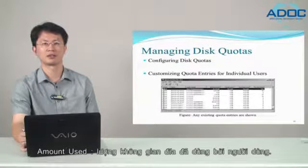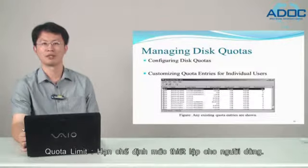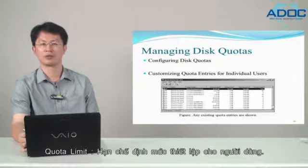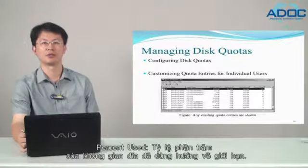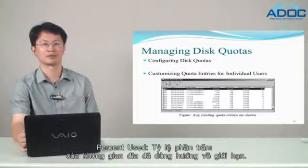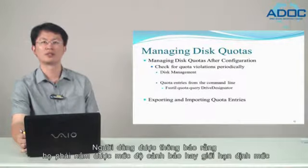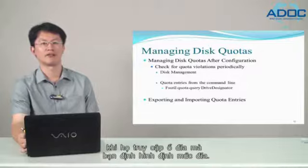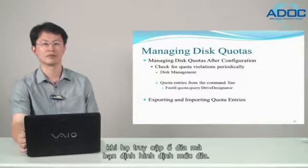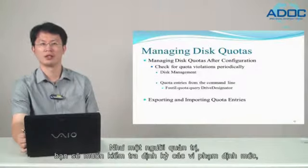The quota entries show the following information: the amount of disk space used by the user, the quota limit set for the user, the warning level set for the user, and the percentage of disk space used toward the limit. Users are notified when they have reached the warning level or quota limit when they access the volume on which you have configured these quotas. As an administrator, you should check for quota violations periodically.